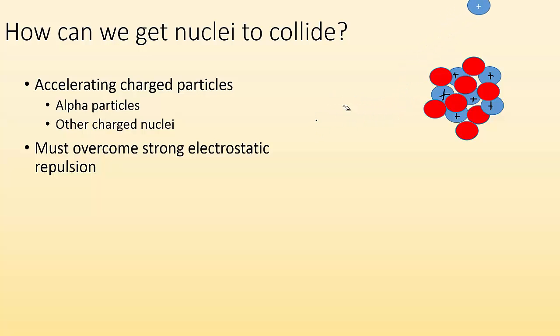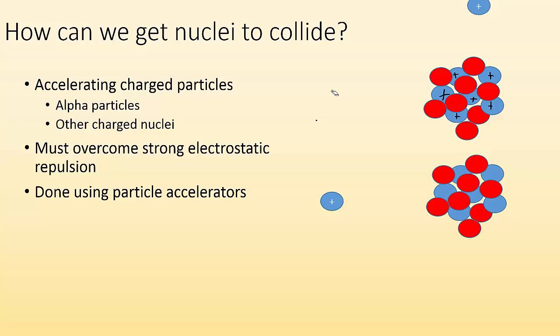It wants to avoid that. So how are we going to overcome that repulsion? We can use particle accelerators, which basically we shoot these particles super fast so that it sticks to the nucleus and overcomes the repulsion.